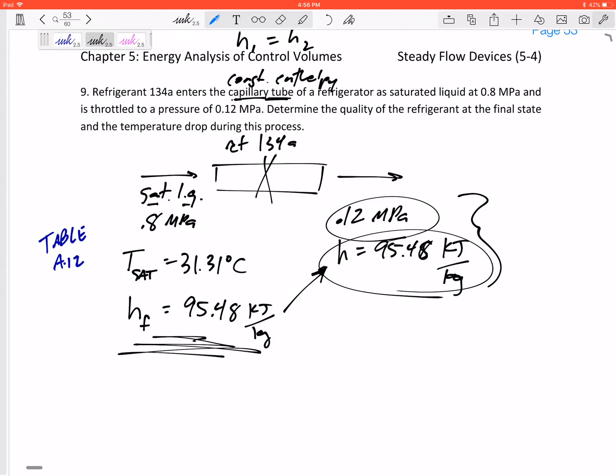Alright, so you gotta know that a capillary tube or throttling valve enthalpy is constant. Calculate or somehow find the enthalpy of the inlet, and then carry that—that is also the enthalpy of the exit. So with these two pieces of information, knowing that the pressure is at 0.12 MPa—